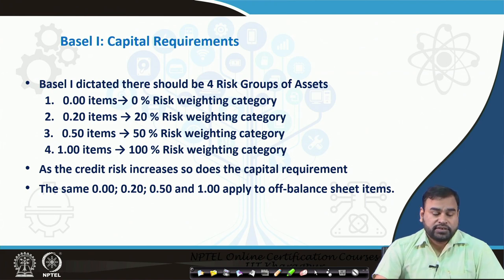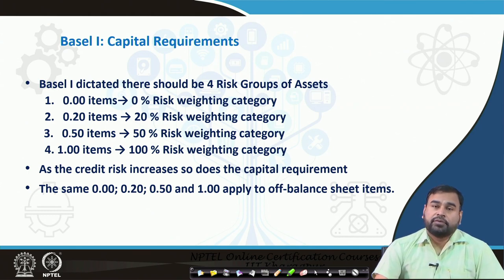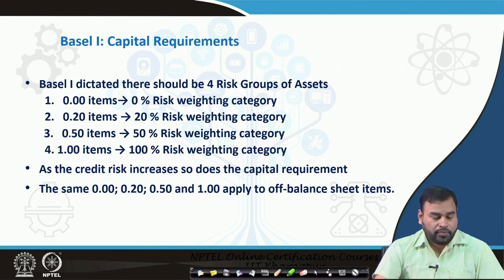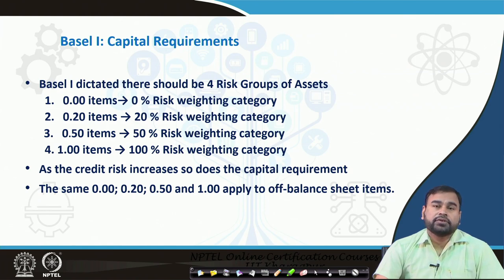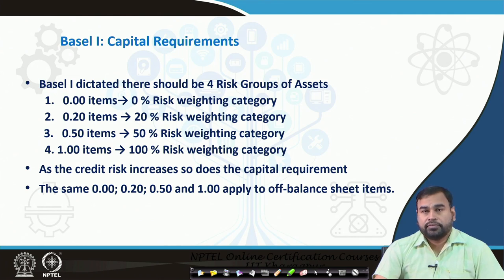Accordingly, total risk-weighted assets can be calculated. If credit risk increases, capital requirements should also increase because to maintain the required ratio, if risk increases, capital must also increase. The same approach applies for off-balance sheet items, but there is a conversion factor to convert off-balance sheet items into on-balance sheet equivalents using certain conversion factors.